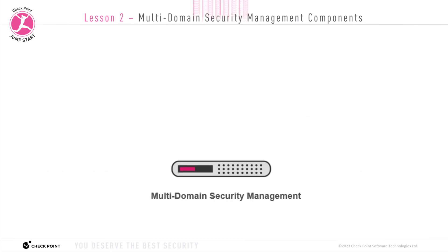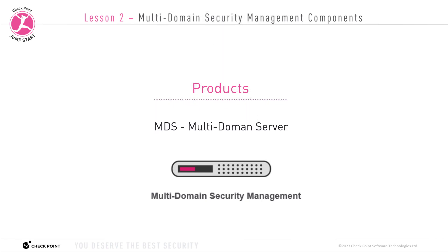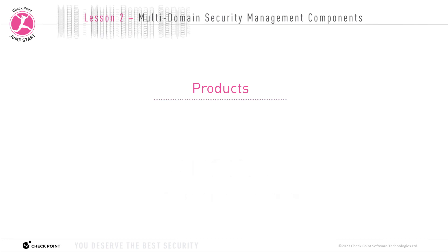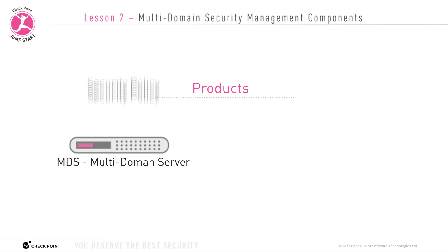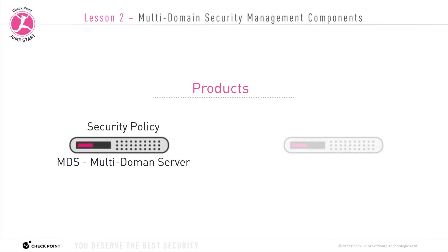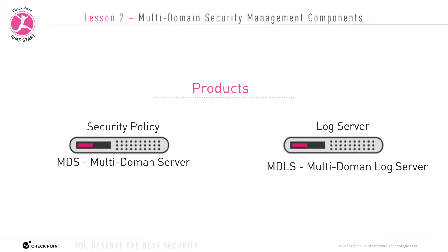The multi-domain management system software has two main products that you can install. The first product is the multi-domain server, what we call the MDS for short. The second product is the multi-domain log server, what we call the MDLS server. The MDS server is the product that will house the security policies from multiple domains. The MDLS server, on the other hand, is the product that will house the log servers for multiple domains.